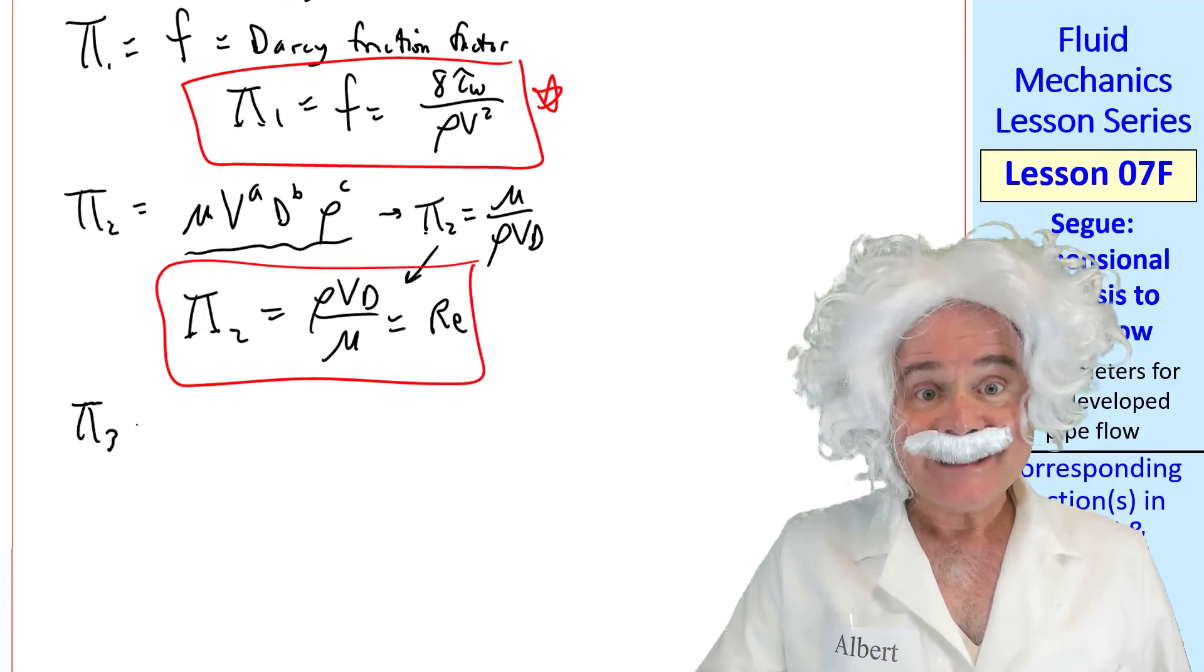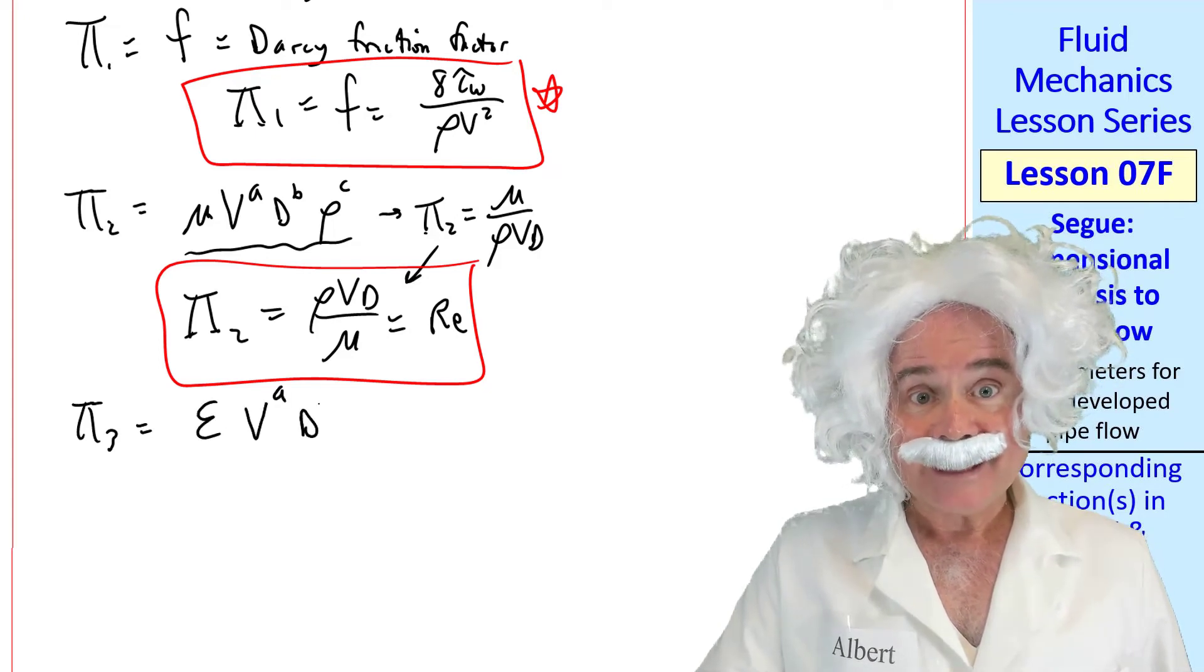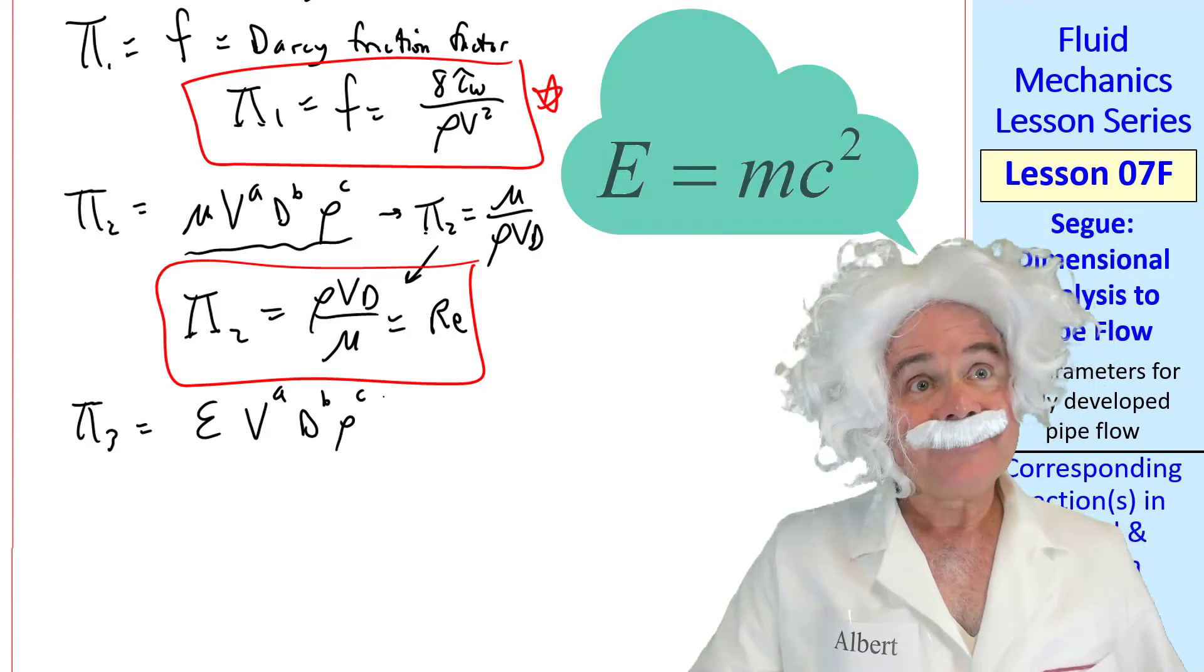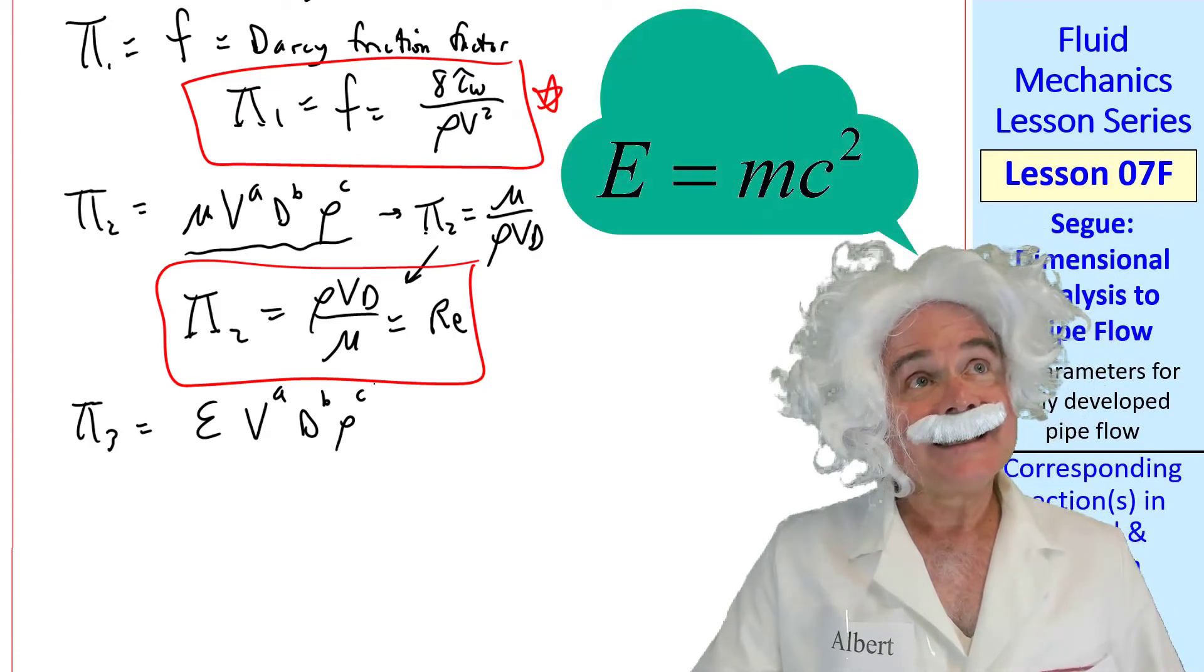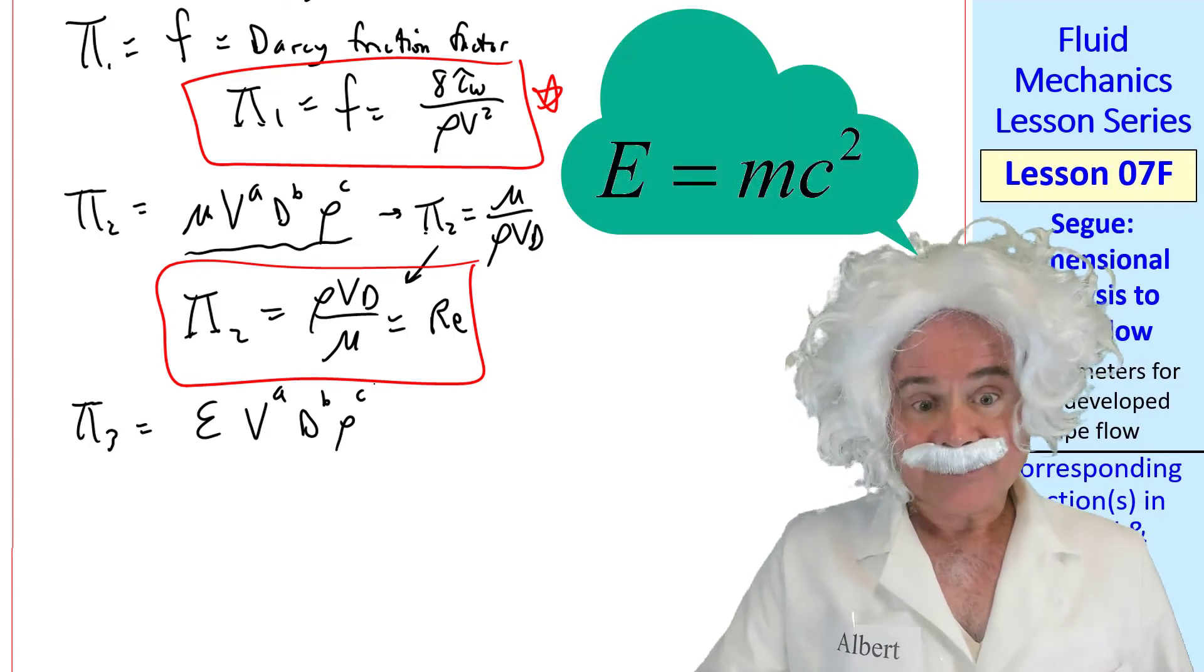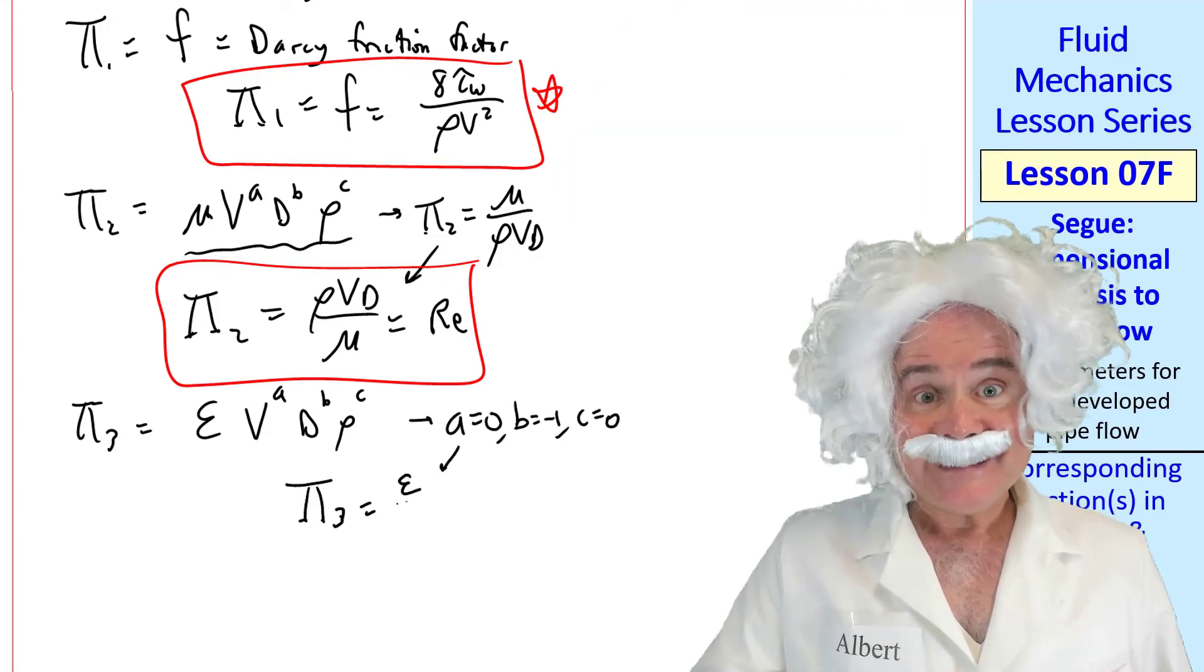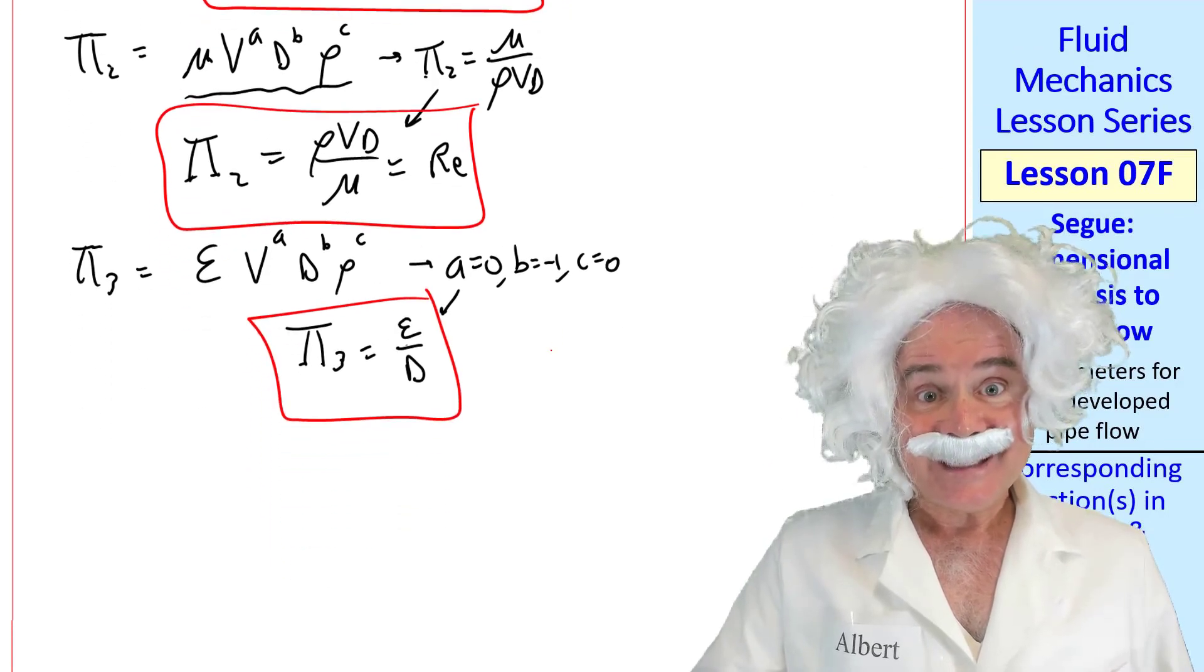Finally, pi three is epsilon times v, d, and mu raised to exponents. This one is relatively simple. Hmm, relatively... Albert, please finish the problem. Sorry. Epsilon is a length, and pi three has to be epsilon over d. We don't even have to do the algebra.